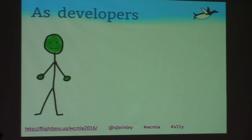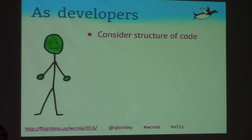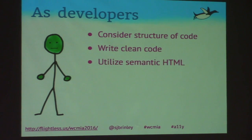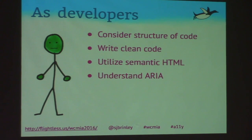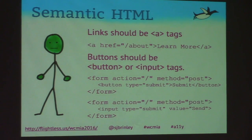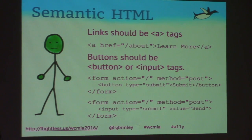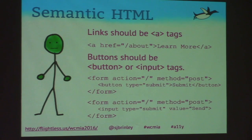Things developers can do: consider the structure of your code, write clean code, utilize semantic HTML, and understand how to use ARIA. With semantic HTML, you use each element in the way it was intended — if you're going somewhere it should be a link; if it's doing something it should be a button. Make sure links use A tags and buttons use button or input elements.